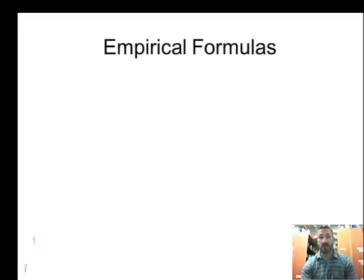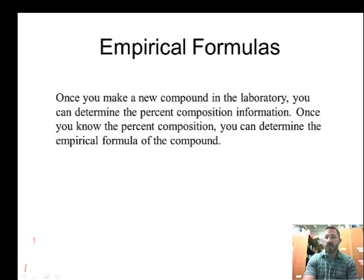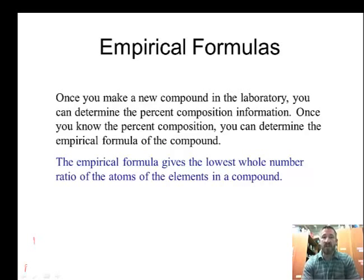Today we're going to learn about empirical formulas. Empirical, when you hear that word, just think of reduced. It's a formula that's been reduced. Once you make a compound in the laboratory, you often determine the percent composition information of the elements in the compound. And from that you can determine the empirical formula of the compound. The empirical formula gives the lowest whole number ratio of atoms of the element in a compound. So this is your definition of empirical formula.